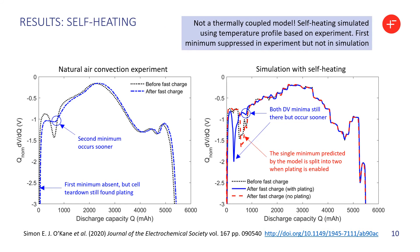The self-heating simulation is more interesting because, unlike in the experiments, both differential voltage minima are still present, but they are shifted — they occur sooner than for the constant temperature case. This result shows very clearly what's happening: the single minimum predicted by the model with no plating is split into two when plating is enabled.